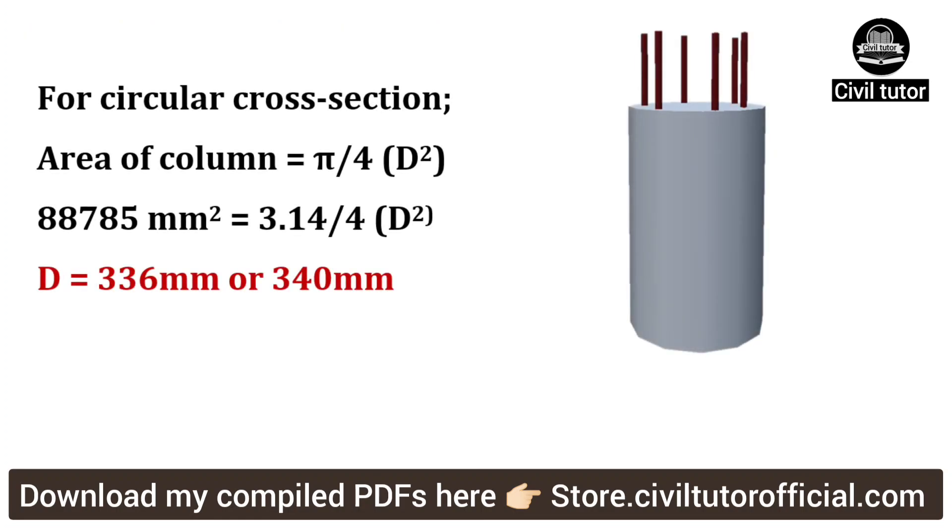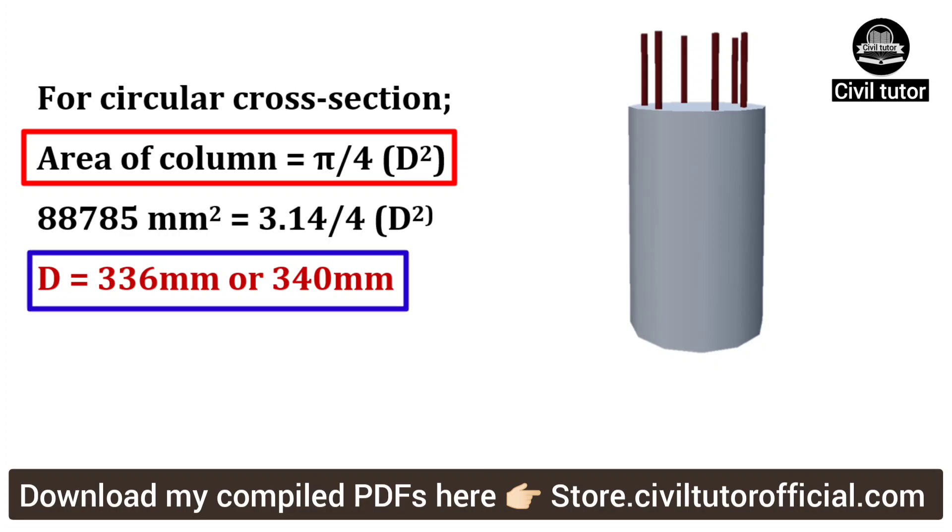For a circular cross section, area of column is given by pi by 4 d square, while area is already calculated as 88,785. On substituting these values, the diameter will be equal to 336 mm or we can take it as 340 mm.